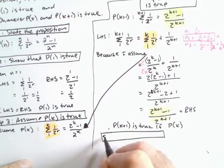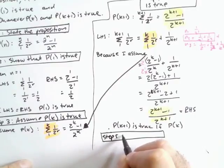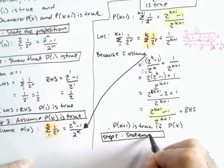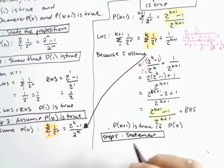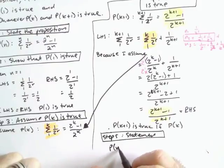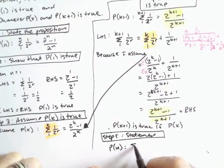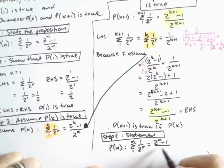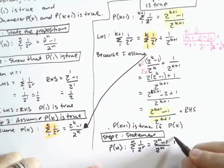Step 5 is the statement. The proposition P(n): the sum of 1 over 2^r equals 2^n minus 1 over 2^n, is true for all natural numbers.